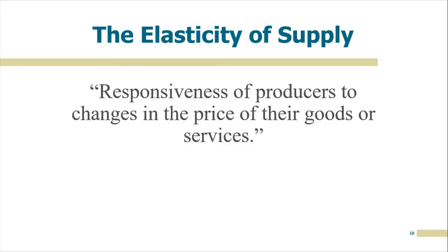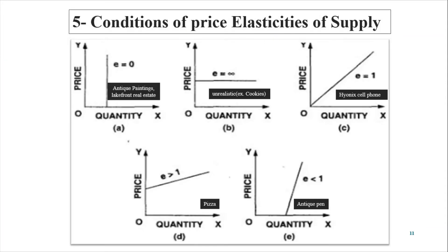Elasticity of supply is the responsiveness of the producer to a change in one of the variables on which supply depends. The first example is perfectly inelastic supply, where elasticity is zero. Take the example of a painting like the Mona Lisa — even if the price keeps increasing, the supplier cannot make more and more copies of Mona Lisa because people buy it precisely because it is unique. So the price increase does not increase the supply.